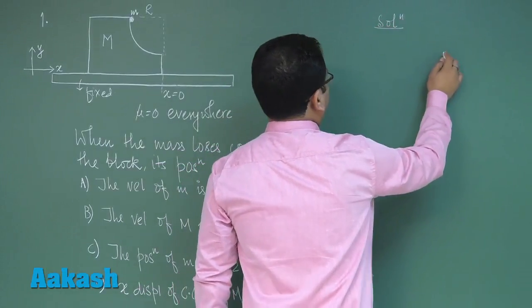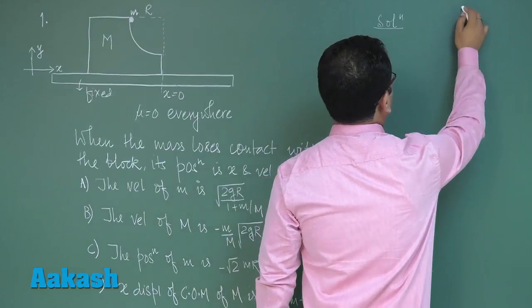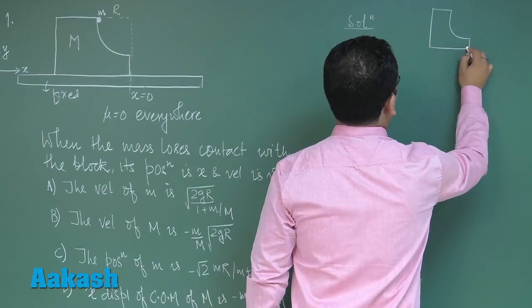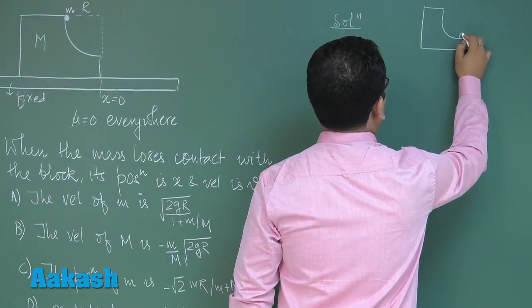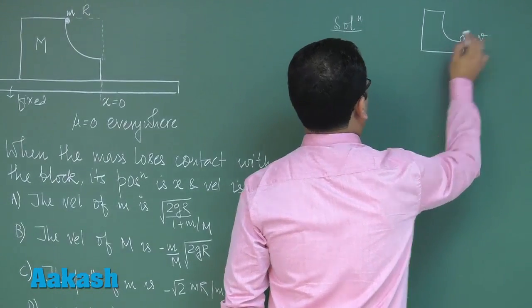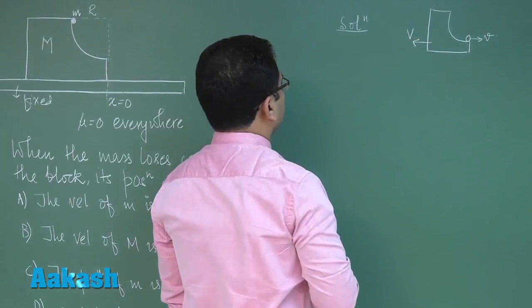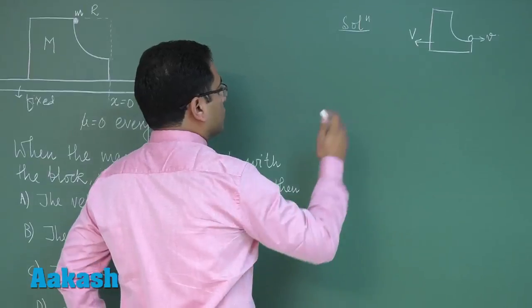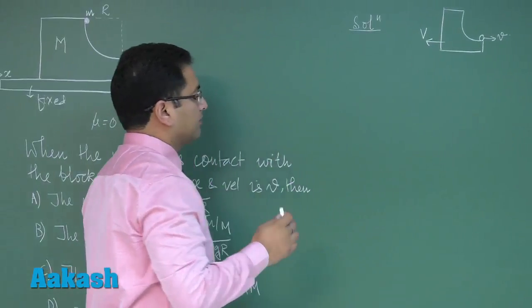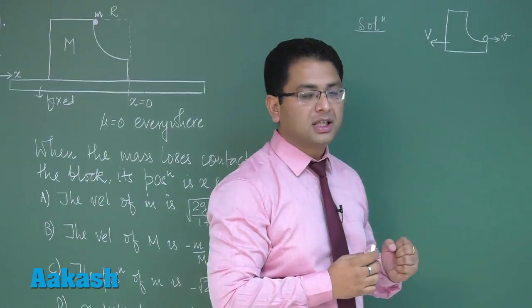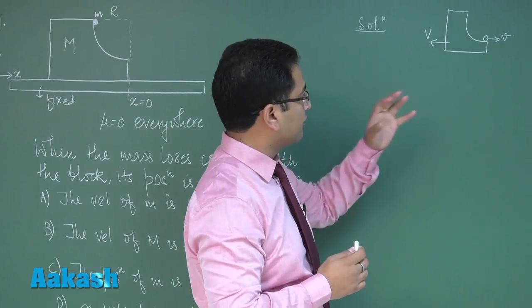What we'll do is by the time the block reaches here there's a small block and let it have velocity small v and this have velocity capital V. Let's try to see using conservation of linear momentum but a very notable feature here is linear momentum is not conserved along y because the net force is not 0.